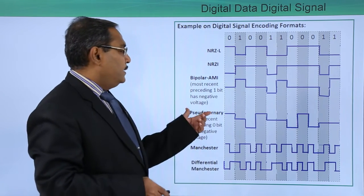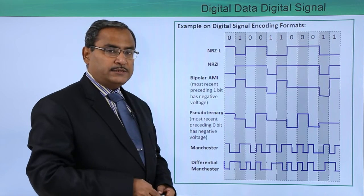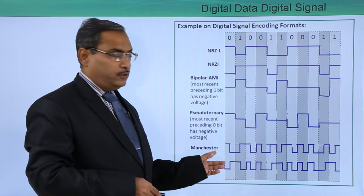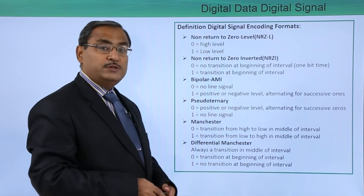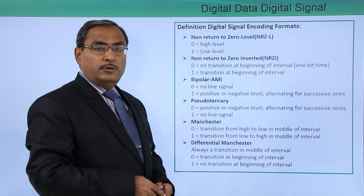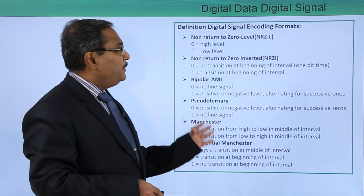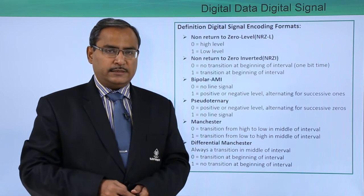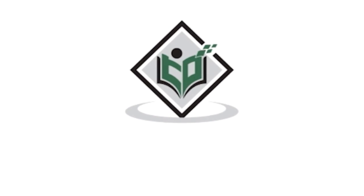So in this way we have discussed NRZ-L, NRZ-I, Bipolar AMI, Pseudo Ternary, Manchester, and Differential Manchester. You can take a snap of this picture and this slide, and then practice on different sets of binary data. In this video we have discussed digital data and digital signal. Thanks for watching this video — TutorialsPoint.com, Simply Easy Learning.